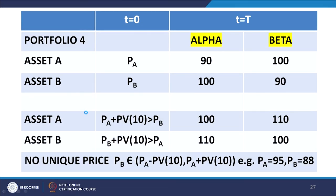Similarly, we can work out the bounds in respect of portfolio 4, which comprises again two assets A and B priced at P_A and P_B. Asset A is giving you 90 and 100 in the two states alpha and beta. Again, prima facie there is no information that enables us to take up arbitrage exercises directly. However, working in the same manner as portfolio 3, we can arrive at bounds: P_B must lie between P_A minus the present value of 10 and P_A plus the present value of 10. By symmetry, we get the same bounds for P_A as well.